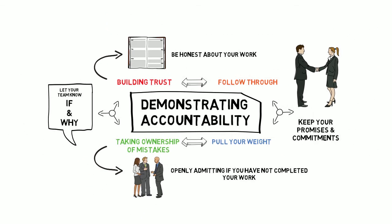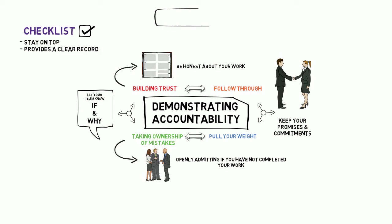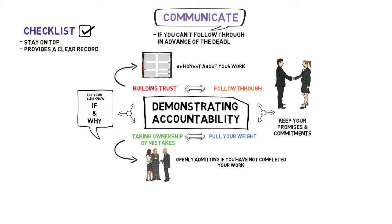Some tools that are effective at helping students demonstrate accountability are checklists. They keep you on top of your commitments by keeping a clear record of everything you have committed to. Also, letting your team know if you aren't going to be able to follow through on one of your commitments rather than just not doing it, especially in advance of its deadline, demonstrates to your team that you care about the team's collective success and are working in the interest of the team rather than yourself.